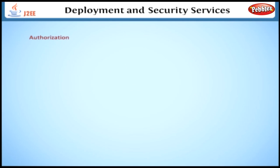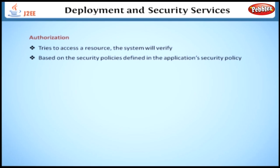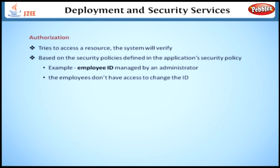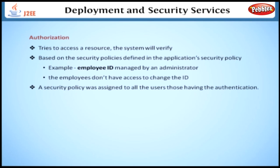Authorization. When an authenticated user tries to access a resource, the system will verify whether the user is authorized or not based on the security policies defined in the application's security policy. For example, in a company, the employee ID is managed by an administrator. The employee doesn't have access to change the ID. Similarly, a security policy is assigned to all the users who have authentication.